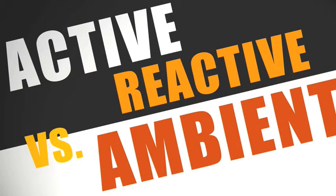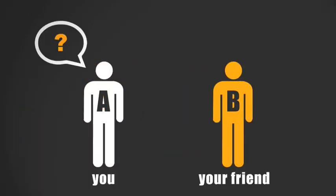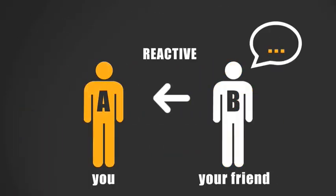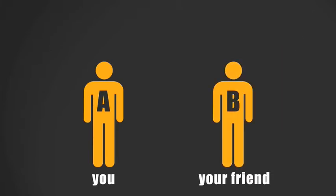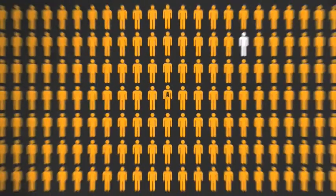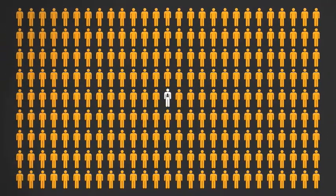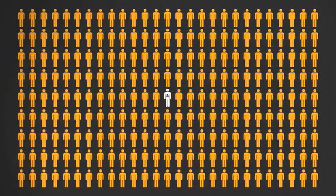How is the ambient model different? Well, traditionally, if you want to know what a friend is doing, you have to actively ask him, "What are you doing?" and he would reply reactively. This works fine until your social network grows larger and larger and larger, and the process of contacting each person individually requires too much time and effort.